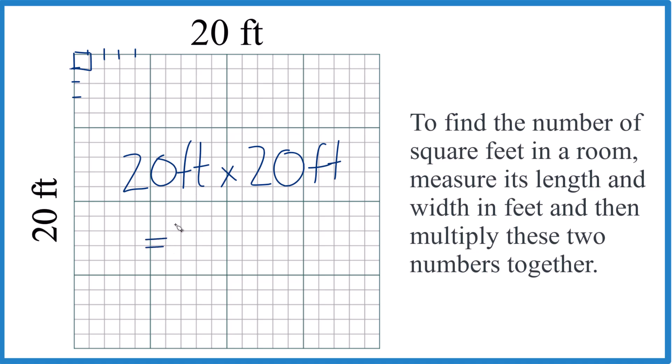And when we do that, we get 20 times 20, that's 400, and then feet squared, because it's feet times feet, we're just going to call that square feet.